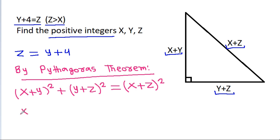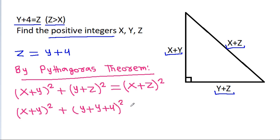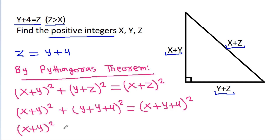Substituting g = y plus 4, we get (x plus y) squared plus (y plus y plus 4) squared equals (x plus y plus 4) squared, which is (x plus y) squared plus (2y plus 4) squared equals (x plus y plus 4) squared.